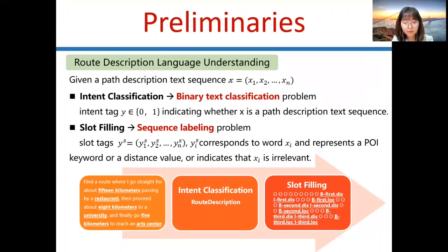I will introduce preliminaries in SpeakNav. Route description language understanding includes two tasks: intent classification and slot filling. Given a route description text sequence x, intent classification is a binary text classification problem. It generates an intent tag y determining whether x is a path description text sequence. Slot filling annotates the sequence by slot text, which represents POI keywords, distance values, or irrelevant words. It is a sequence labeling problem.